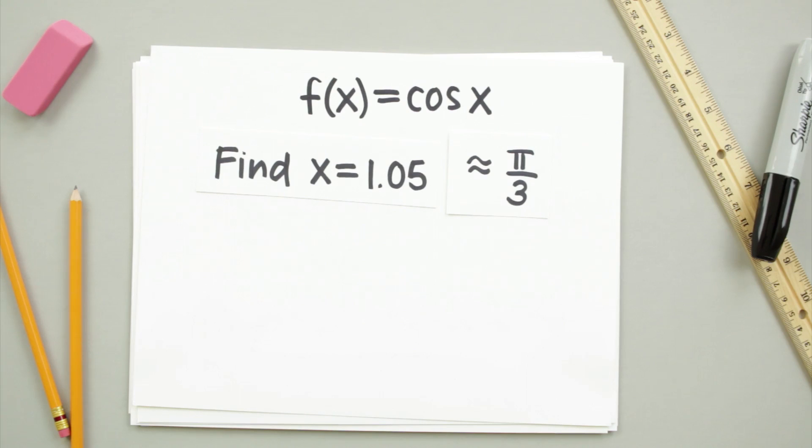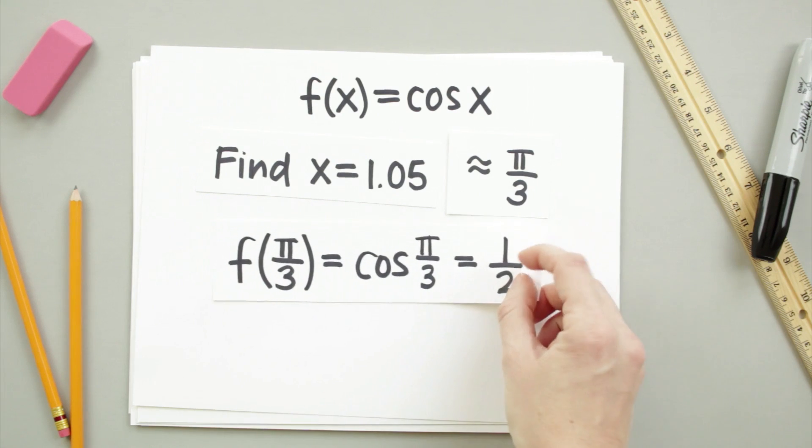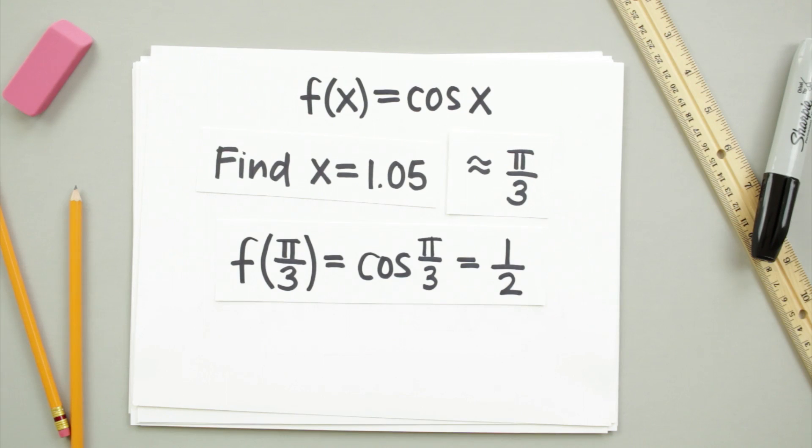f of pi over 3 is actually much simpler to find, so we can use that knowledge to find an appropriate estimate for f of 1.05. From the unit circle, we know that f of pi over 3 is equal to cosine of pi over 3, which is equal to 1 half.